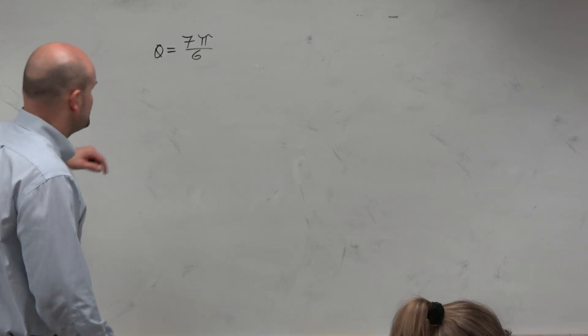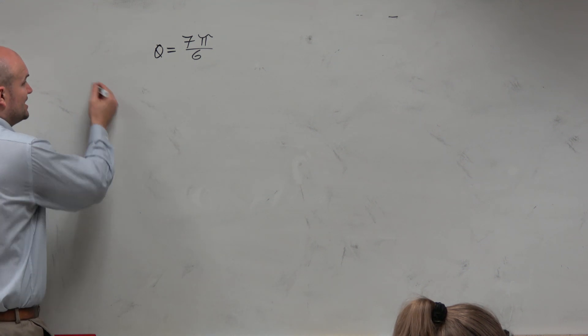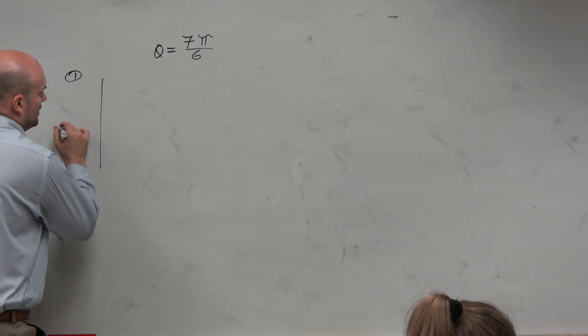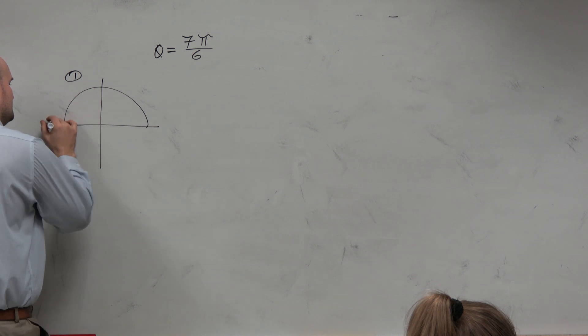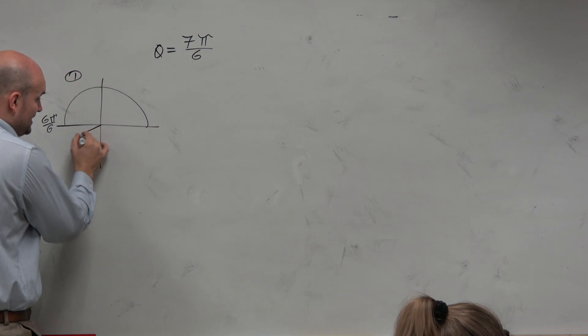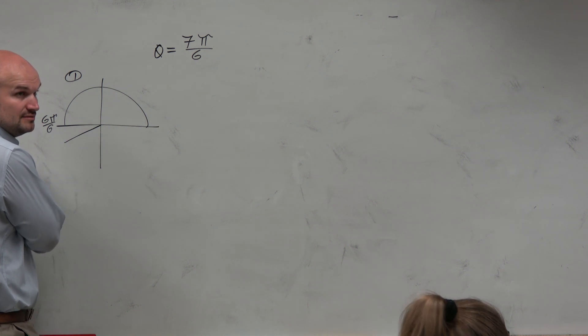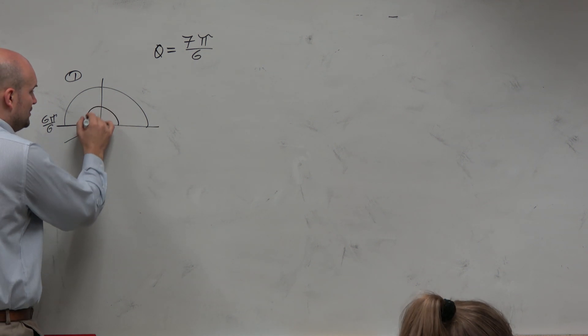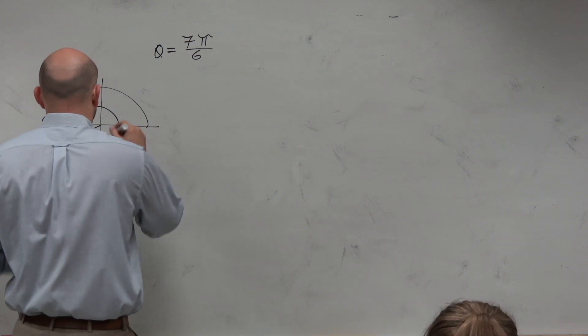So if I was going to do this in my step one, I would just sketch the angle. I know halfway around a circle is pi, which is 6 pi over 6. If I need to get to 7 pi over 6, that's just going to be an extra pi over 6. So my angle is roughly going to be right there.